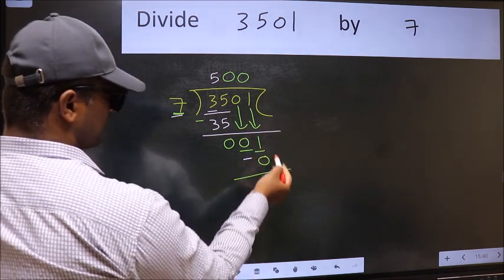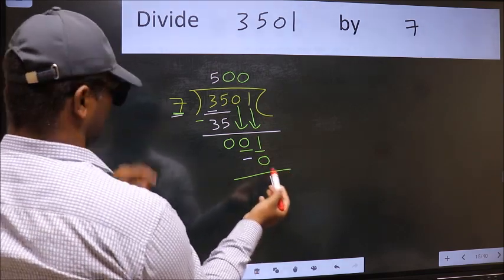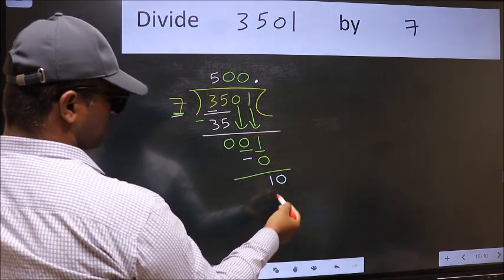Over here, we did not bring any number down. And 1 is smaller than 7. So now we can put dot and take 0. So, 10.